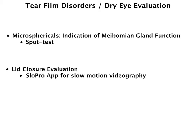The next part of the dry eye evaluation looks at two different aspects: microsphericals, which is an indication of meibomian gland function done by using what we call the spot test, and lid closure evaluation. The best app for lid closure evaluation is called SlowPro, which allows slow motion videography at about 60 frames per second. It really helps to slow that down. The best way to show these is with a video.